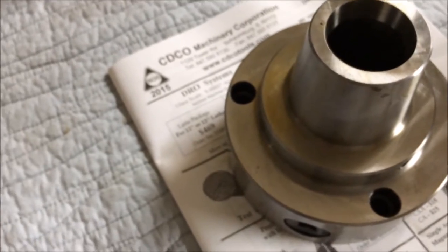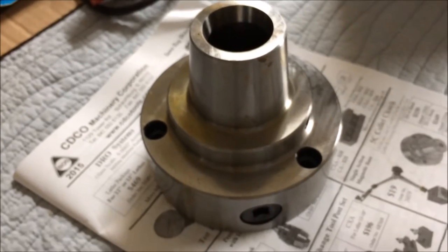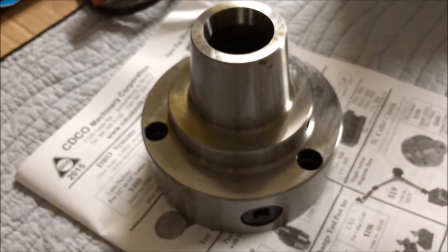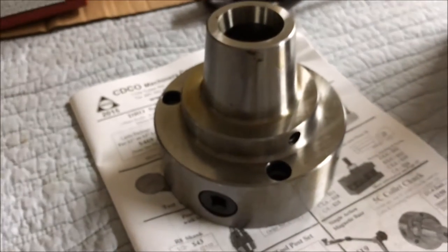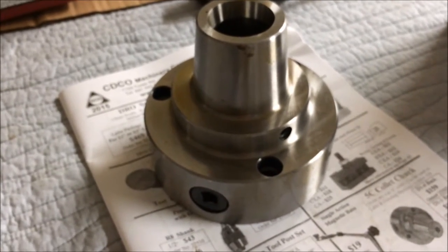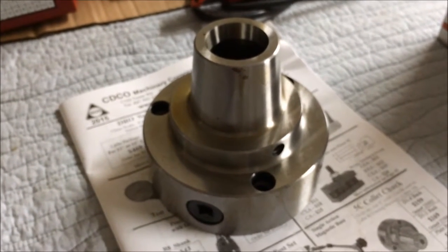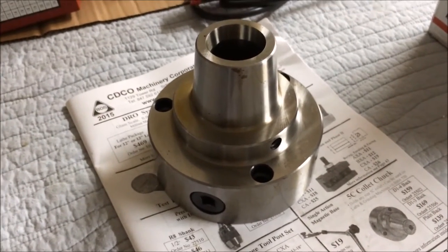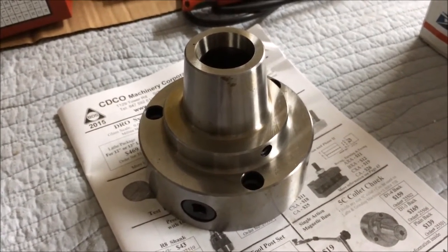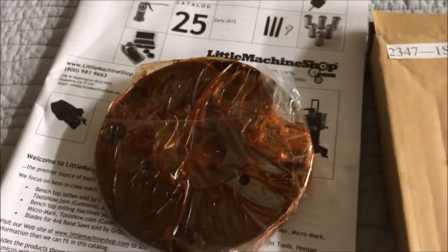LittleMachineShop.com sells a 5c collet chuck. It's quite a bit more money. I think it's around $250. Possibly a better collet chuck. I think maybe it might be a Buck chuck brand collet chuck, although they don't say that. Wasn't quite ready to shell out that kind of money for this thing, so I went with the cheaper option off eBay. Hopefully I won't regret that. So here we go. Let me try to get this going and see what we can do.